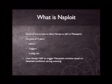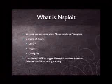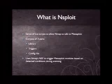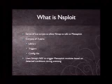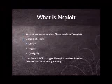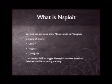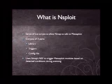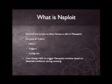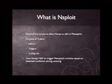Nsploit is a series of Lua scripts which allow Nmap, which is a port scanner, to be able to talk to Metasploit, which is an exploitation framework. It consists of three basic parts: the library that facilitates all the communication; triggers, which when the port scanner detects certain applications on certain ports fire and invoke library calls; and the config file, which helps direct what sort of options we're looking at for execution. All of this uses Nmap's scripting engine to trigger Metasploit modules based off detected conditions.